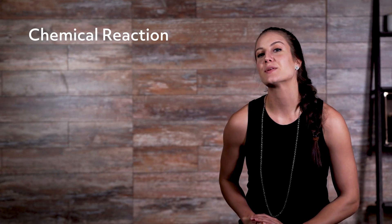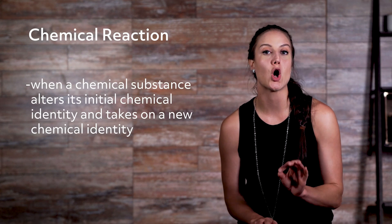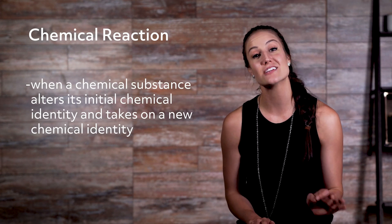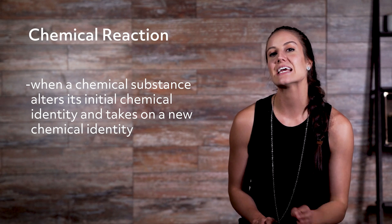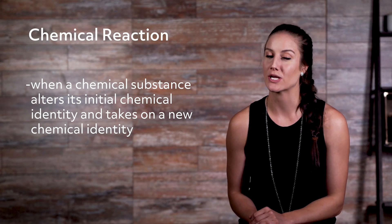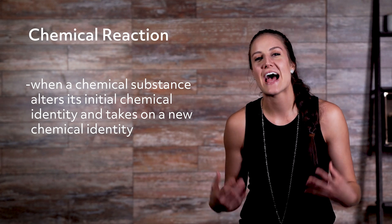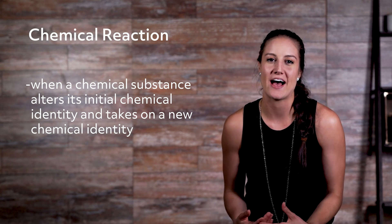First, the definition. A chemical reaction has taken place when a chemical substance alters its initial chemical identity and takes on a new chemical identity. So basically, what's happening is you have at least two molecules that come together perfectly, hitting each other in the exact right way, and they change into something else.